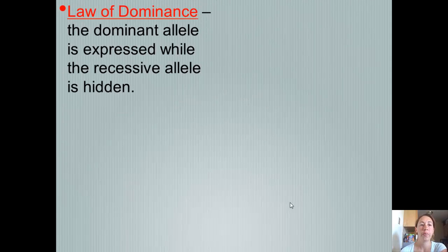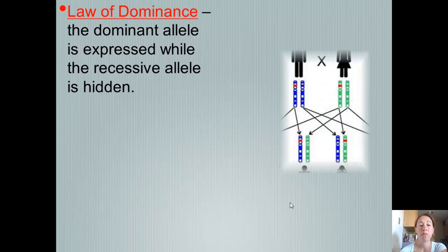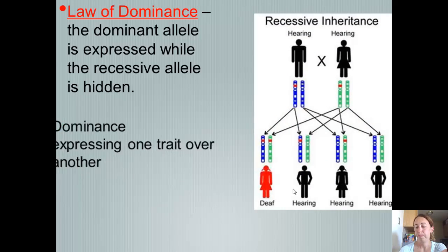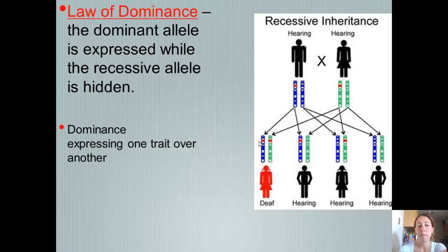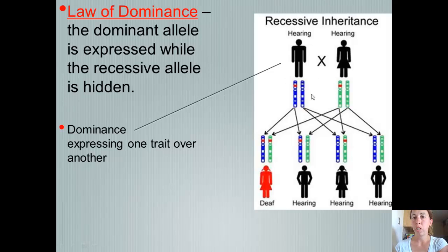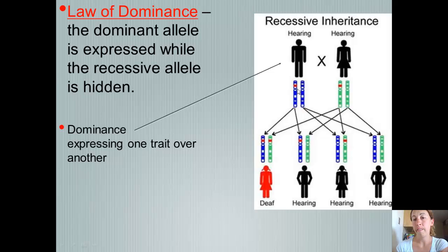The Law of Dominance states that the dominant allele is expressed while the recessive allele is hidden. Dominance expresses one trait over another. In this picture, a man has one allele for deafness, but because he only has one and the gene for deafness is recessive, he can hear. Similarly, a woman also has a gene for deafness, but because she also has the gene for hearing, she can hear — that deafness gene is recessive.